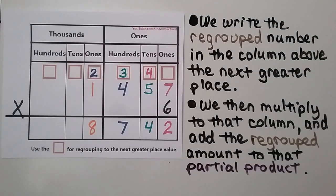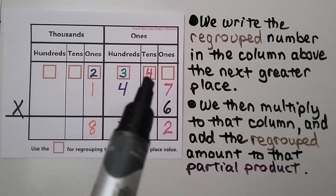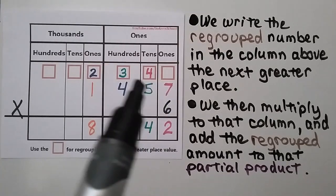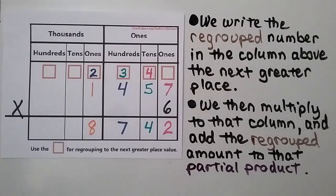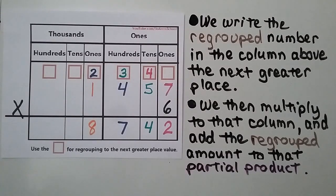We write the regrouped number in the column above the next greater place value. We then multiply to that column and add the regrouped amount to the partial product.